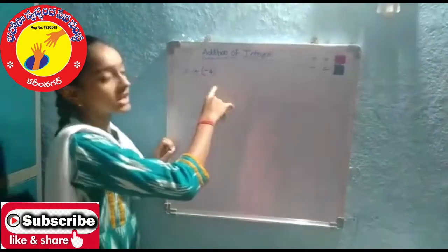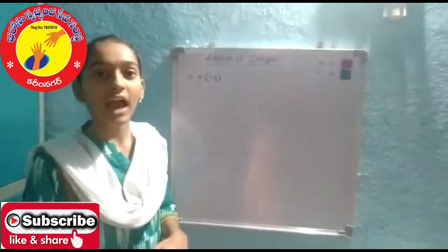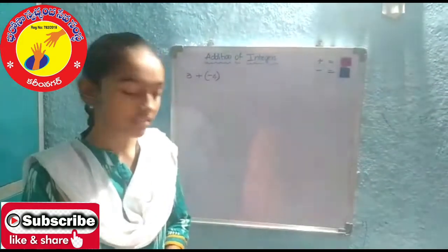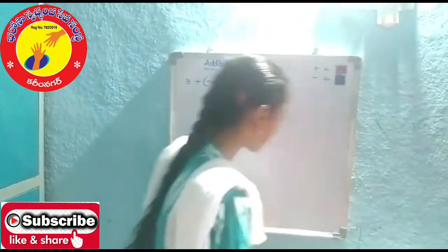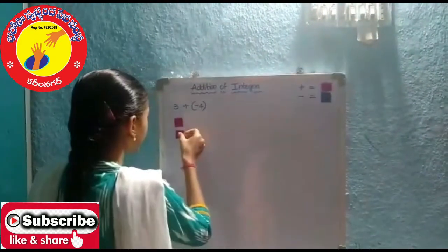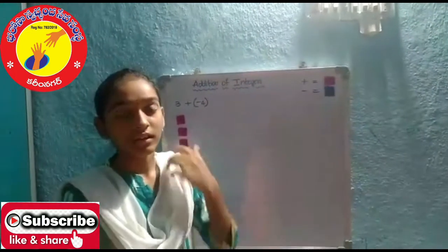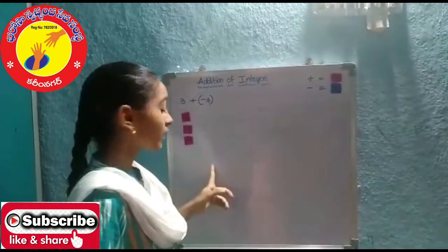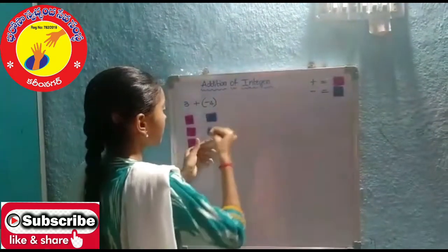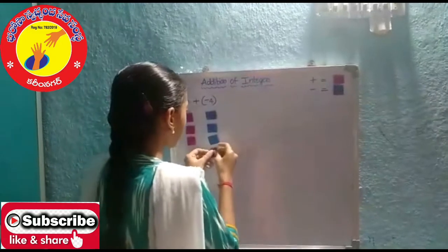Here is the question for addition of integers: 3 plus negative 4. It means we have to take 3 positive integers and 4 negative integers. 1, 2, 3, and 4 negative integers: 1, 2, 3, 4.